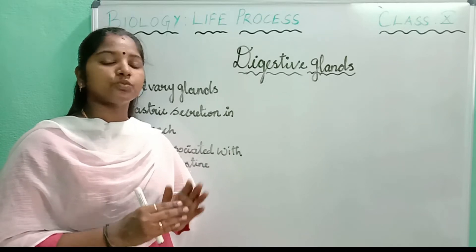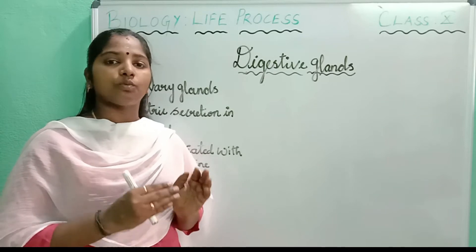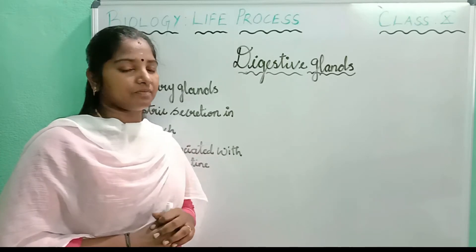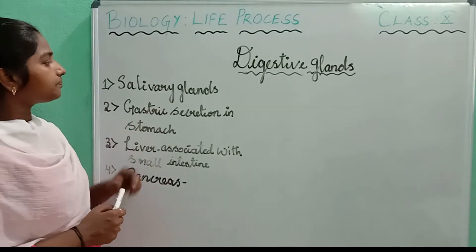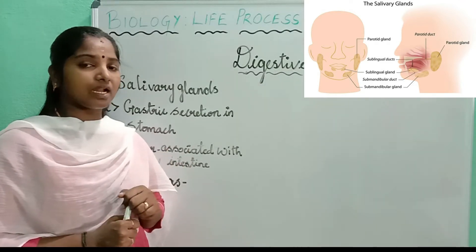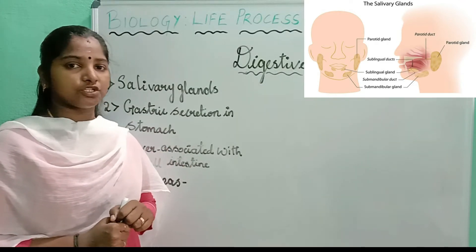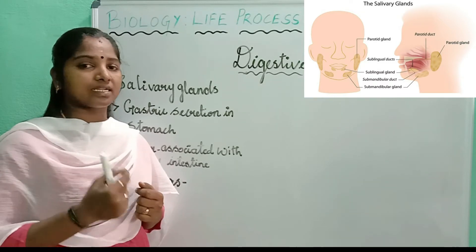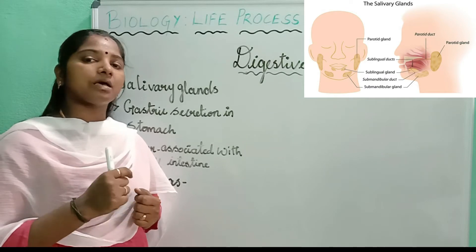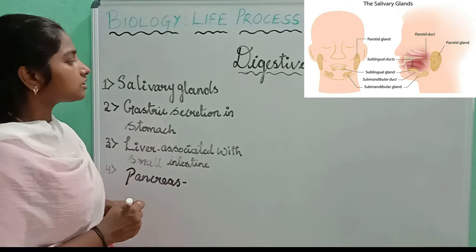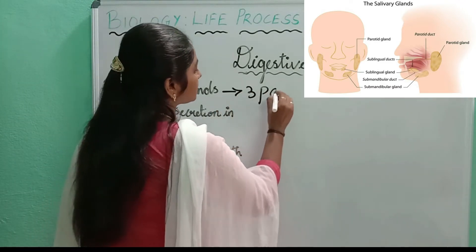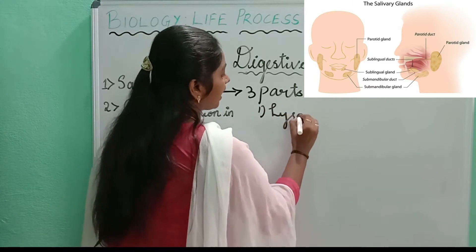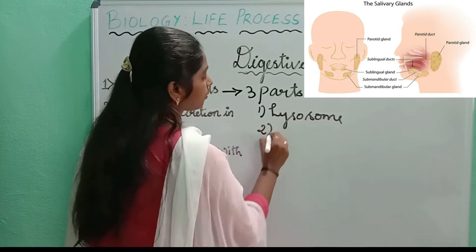Today we are going to see another part — the digestive glands, that is, whatever glands are associated with digestion. So what that gland is helping to do in our body, let us see all those things. Come, we will go into the class now. So the first one, if you see, is the salivary glands. In the alimentary canal, the buccal cavity helps for digestion. The salivary gland secretes enzymes called lysozyme and salivary amylase.